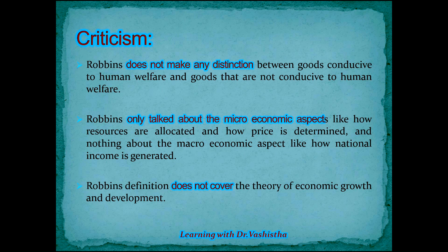Robbins only talked about microeconomic aspects like resource allocation and did not cover the larger macro economic aspects, such as income distribution or national income distribution. Furthermore, Robbins' definition does not cover the theory of economic growth and development. He only talked about resources, scarcity, the number of users, and how choices are made, but did not touch on the real main concerns of the overall economy, which is how his theory was criticized.